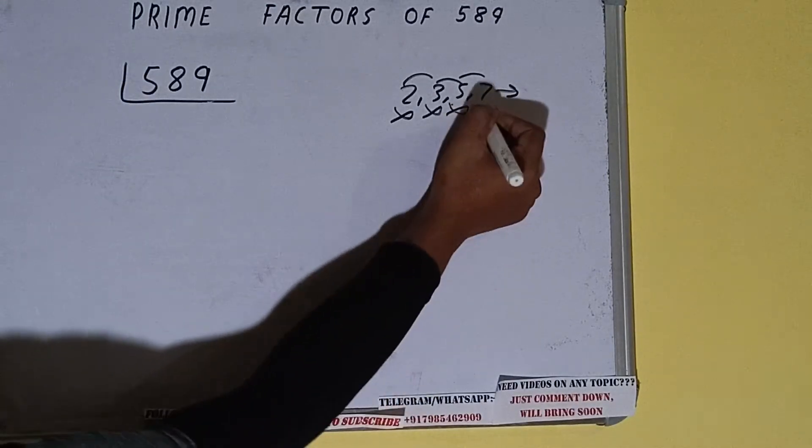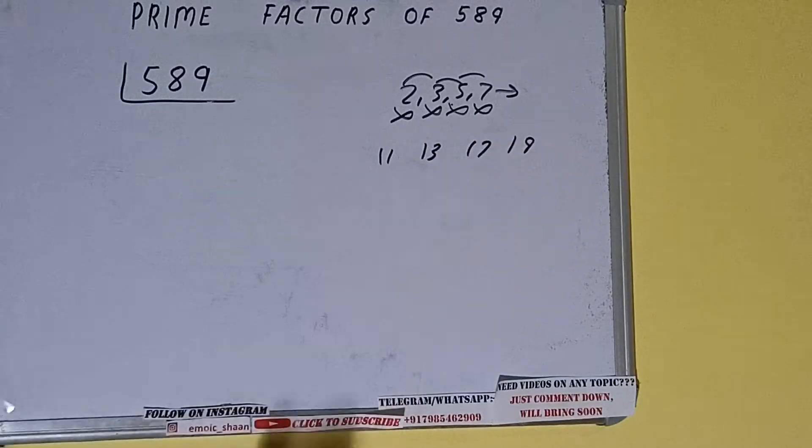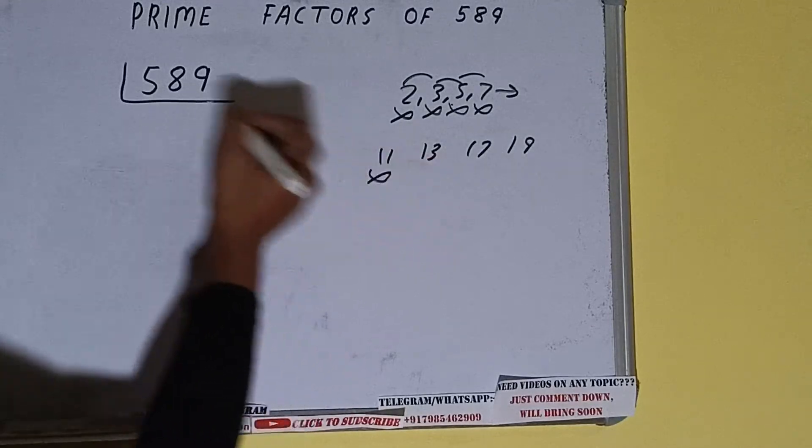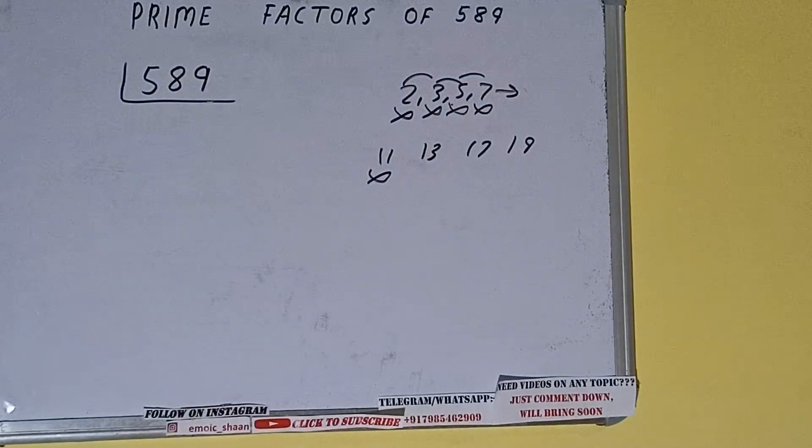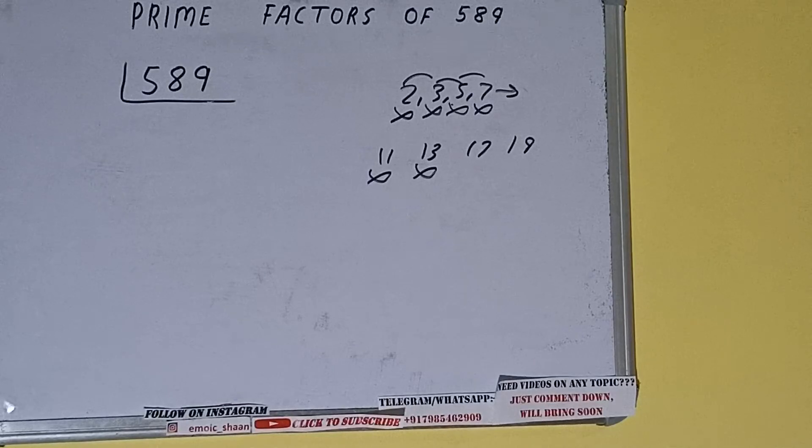Let's check with 11 and 13, then 17 and then 19. 11 fives are 55, 3, 9. It is not divisible by 11 also. Let's check with 13. 13 fours are 52, 6, 9. With 13 also not divisible. Let's check with 17. 17 threes are 51, 7, 9. With 17 also not divisible.